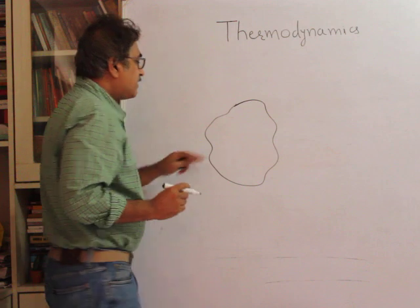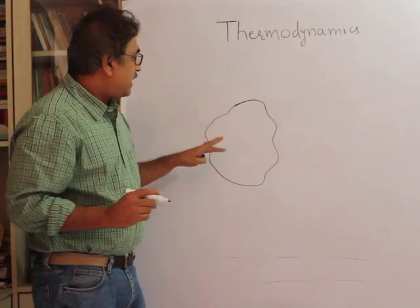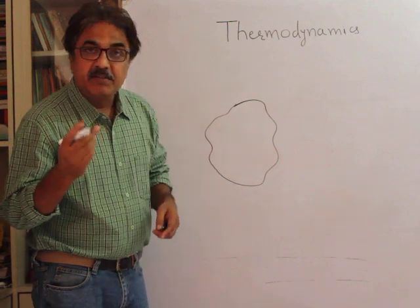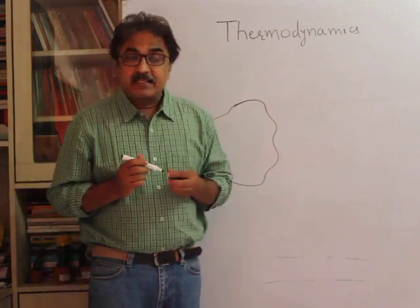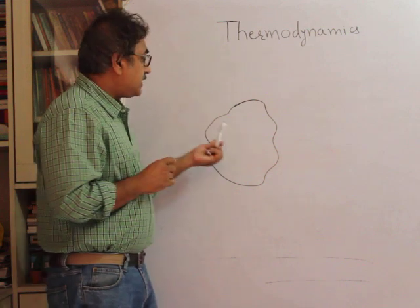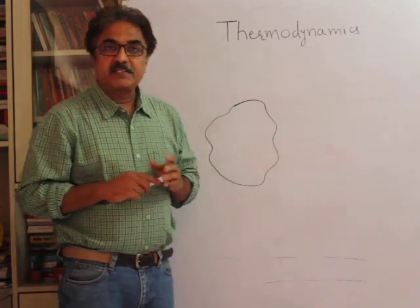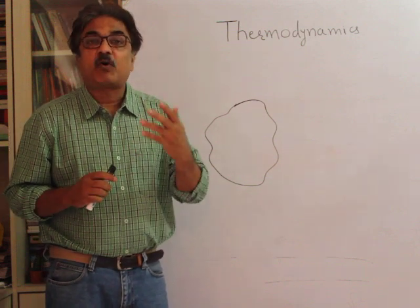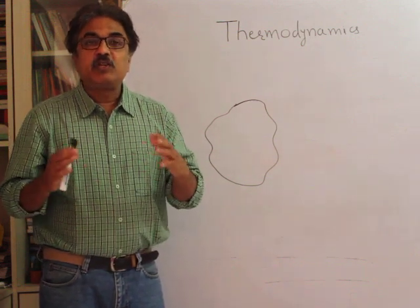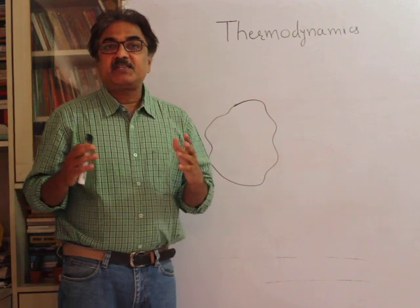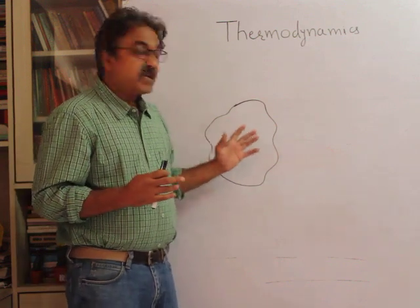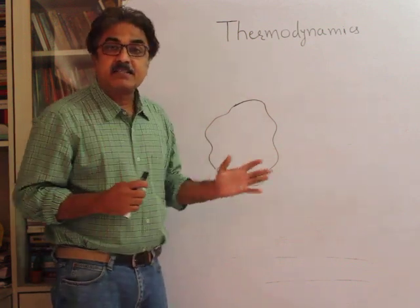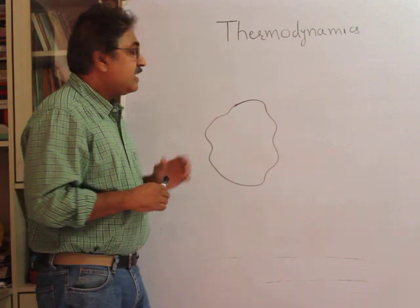Our system is that of a fluid. You have some working substance here, and if you want to say that this system is under equilibrium, it means the macroscopic properties of this system should not be changing spontaneously. There should be no spontaneous change in the properties of the system — only then can we say that this system is under equilibrium.